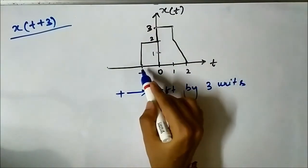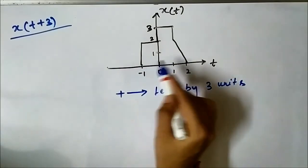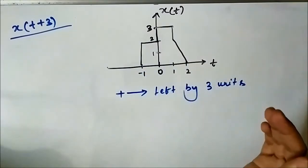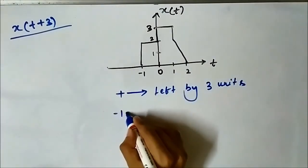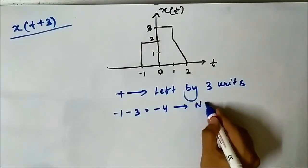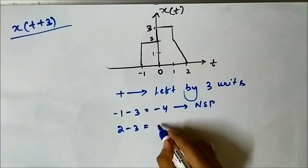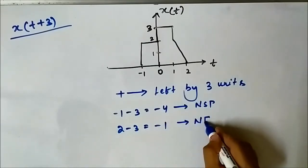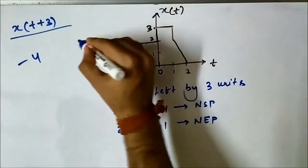Again, what we have to do is pick the starting and ending points of this signal, which are minus 1 and 2. Then subtract 3 from both the starting and ending points. Minus 1 minus 3 gives minus 4, the new starting point, and 2 minus 3 gives minus 1, the new ending point. So the new points are minus 4 and minus 1.